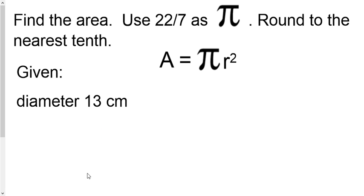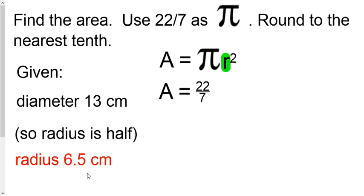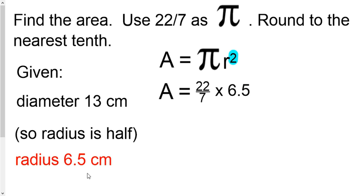Now, what do you do if they give you the diameter? Same thing we've done before — you need to halve it. The radius is half the diameter, so 13 divided by 2 is 6.5. We've got all the information we need. They told us to use 22 divided by 7 for pi, so there that is. Times it by the radius, and don't forget to raise the radius to the second power.